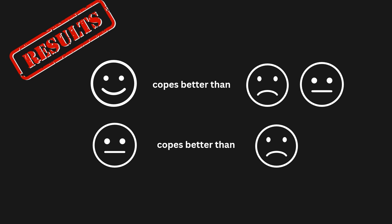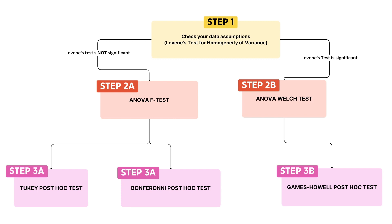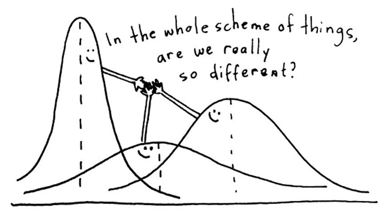To recap how to do an ANOVA, we can look at this flowchart. Regardless of what you are researching, you can follow the path to get to the correct test, leading to a valid result. And with that, we have finished the last statistical test you need to be familiar with for this course. If you have any questions or anything was unclear, please let us know in class and we will do our best to further elaborate. Thank you so much, and good luck on the exam.